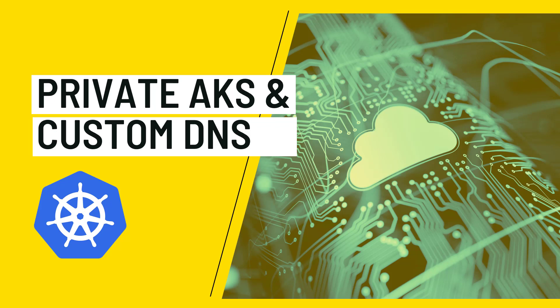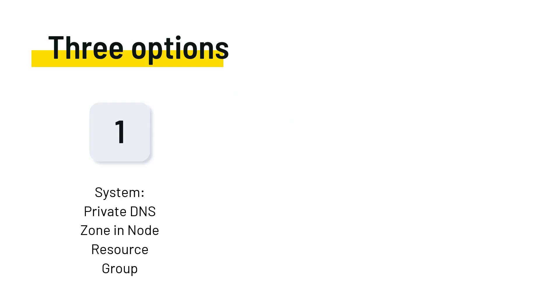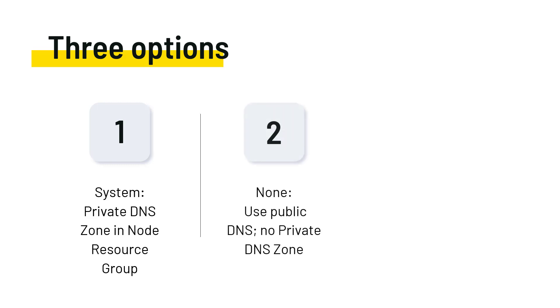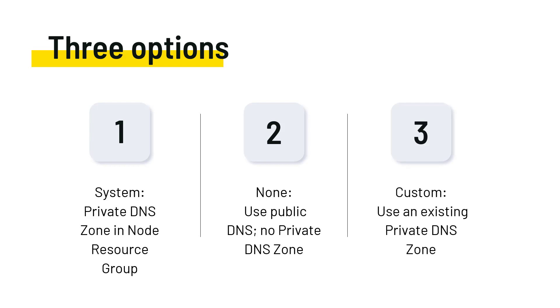We discussed the three available options. The first one being 'system', where Microsoft creates a private DNS zone in the node resource group. The second one being the 'none' option, where public DNS servers are used to create a name that returns a private IP in your network. Neither of these options might be the one you want in many enterprise scenarios.